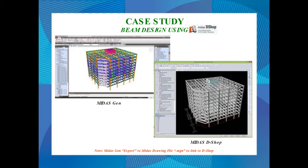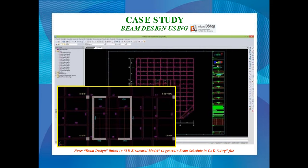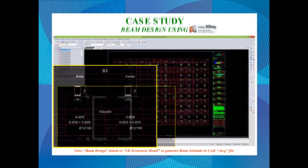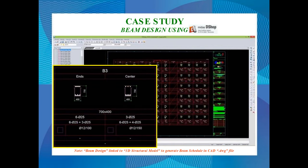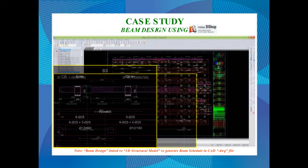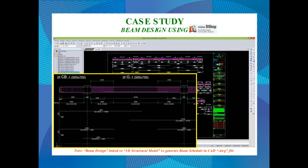Another option we use is MidasDesign Dshop, which is more advantageous. You can easily interlink Dshop from the MidasGen 3D model by exporting MidasGen to a Midas drawing file through the MGN data file format to link to Dshop. With it, you can generate the building frame in CAD format, beam cross sections in CAD format, column sections at the ends and center, and the longitudinal section of the beam with the bar-cutting list.